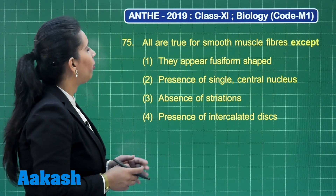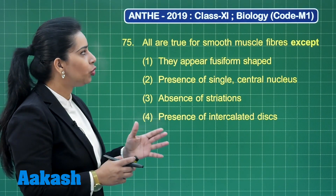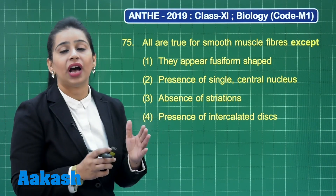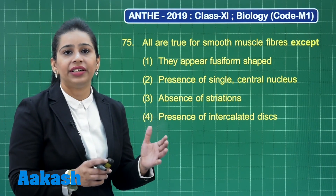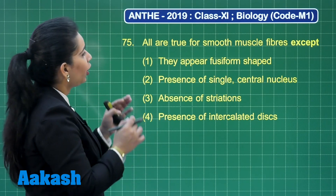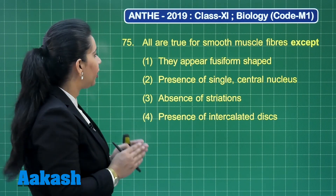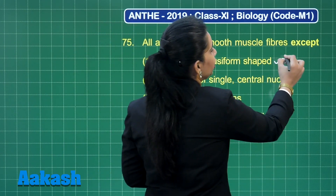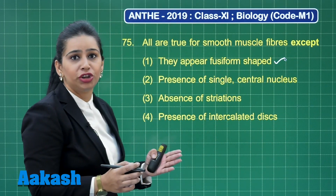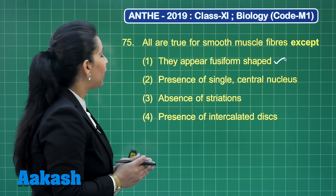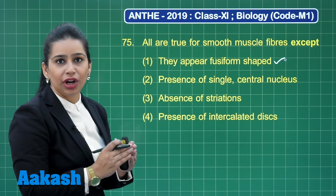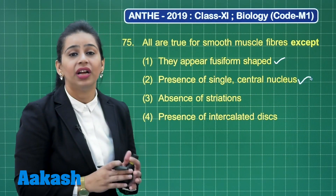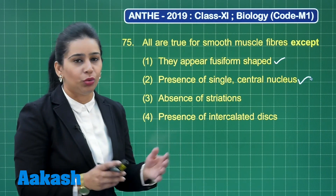The next question is again from muscular tissue: all are true for smooth muscle fibers except. Smooth muscle fibers are present in the visceral organs of our body. The first option — they appear fusiform — is correct because smooth muscle fibers are spindle-shaped. The second option — presence of a single central nucleus — is again true; they have a single central nucleus in a single muscle fiber, unlike skeletal muscles which are multinucleated.